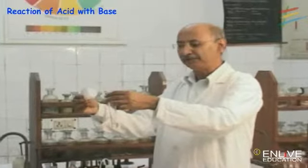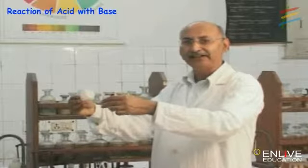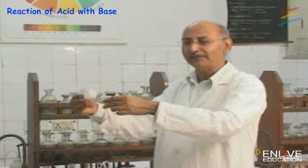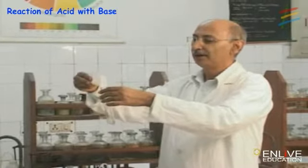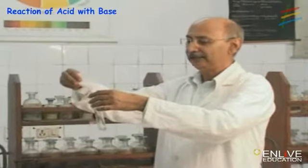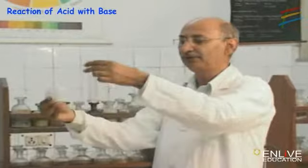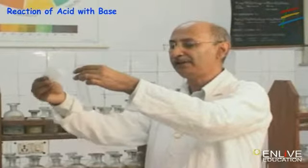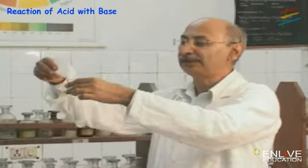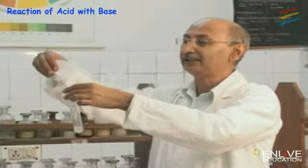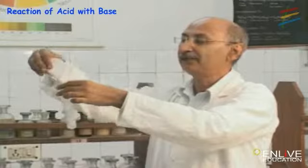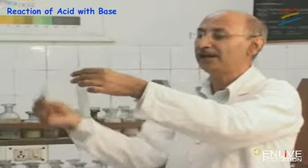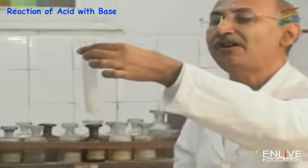Now we are going to take up the reaction between HCl and Sodium Hydrogen Carbonate. When we add sodium bicarbonate to HCl, we get brisk effervescence. This brisk effervescence is due to carbon dioxide gas being formed.